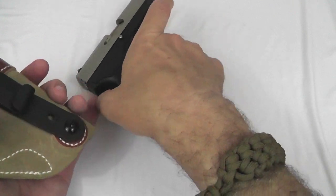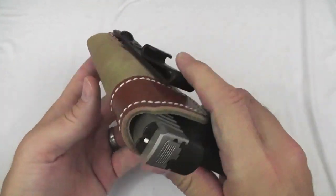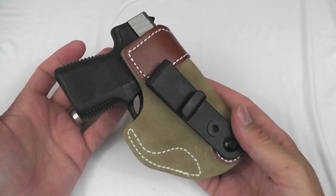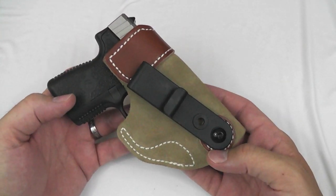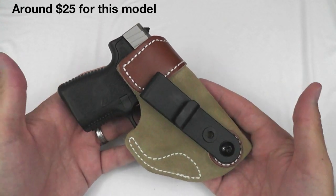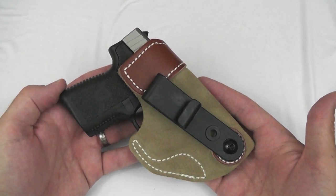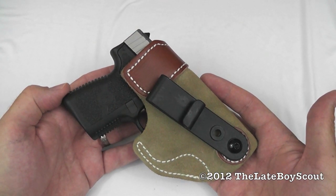Okay, so there you go, guys. That's my review of the DeSantis Soft Tuck or SOF Tuck concealed carry inside the waistband holster. It's got some upsides. It's got some downsides. It is what it is. And it's not priced too badly. So you might want to take a little bit of a hard look at it. And thank you for taking a hard look at this video. I really appreciate your views. Thank you so much for watching. I'm the Late Boy Scout and I'll see you later.